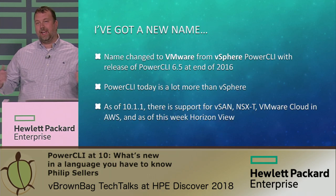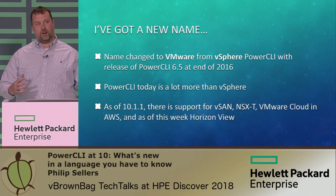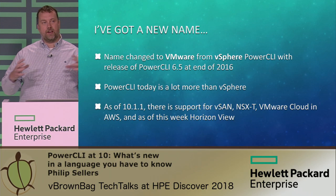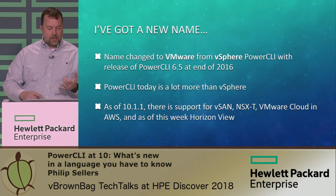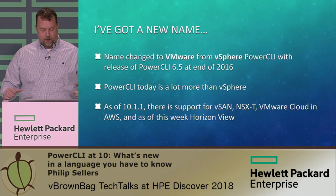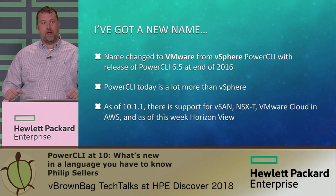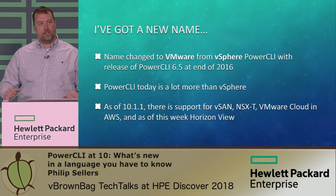PowerCLI also got a new name. At the time they released 6.5 near the end of 2016, VMware decided to change the name from vSphere PowerCLI to VMware PowerCLI. That was indicative of the number of technologies outside of core vSphere they were bringing into the language — things like vSAN, auto-deploy scripts, and other capabilities. They've continued adding more technologies, including VMware Cloud on AWS support added this year.